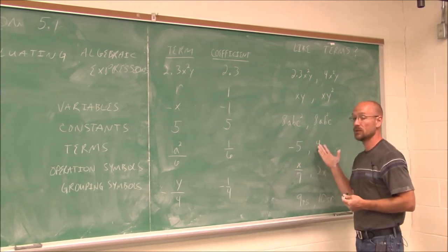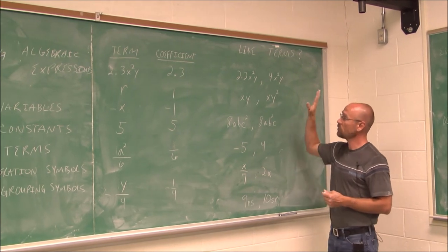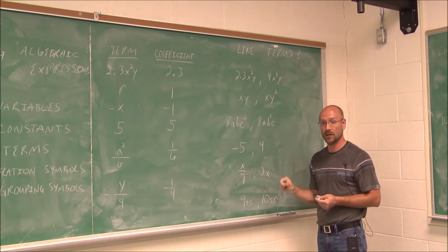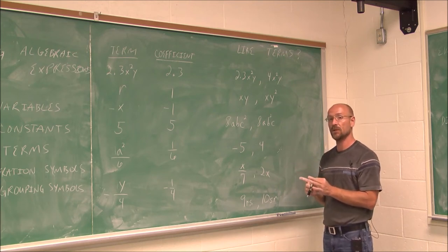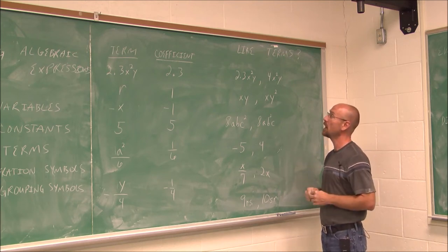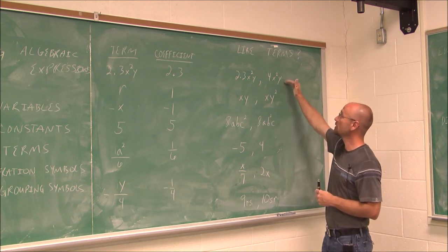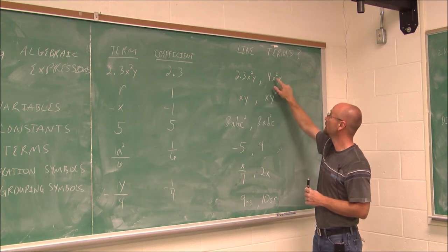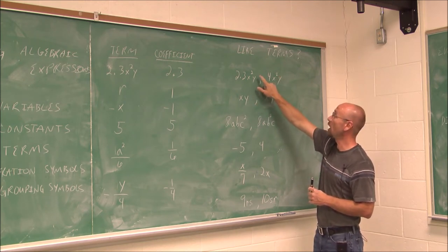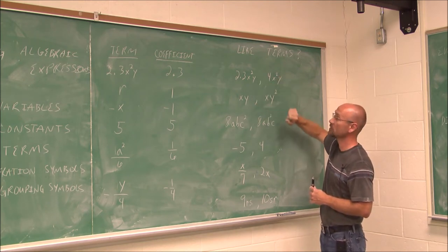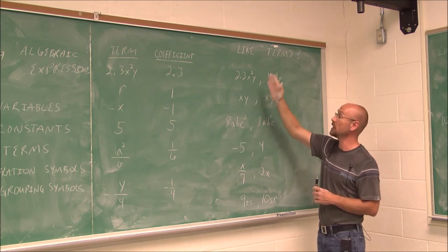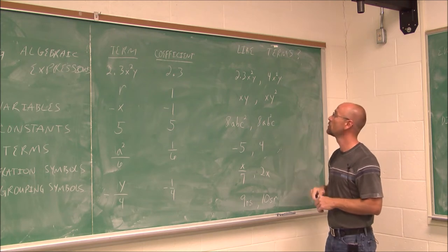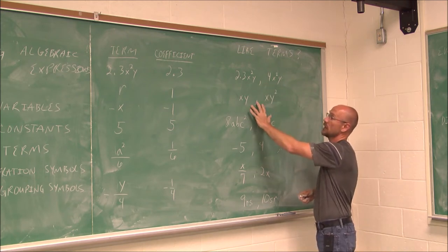The other thing we have to determine is like terms. In order for terms to be like, they have to have the same variables, and each respective variable has to be raised to the same power. For example, two terms both having x squared and y to the first power — they each have x squared and y to the first power — so these would be like terms.